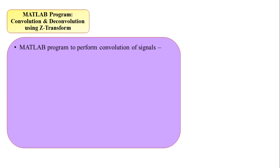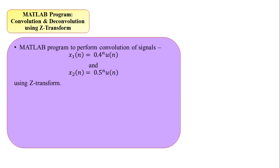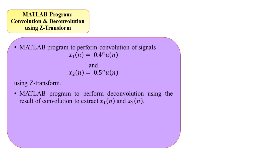We take the program statement as a MATLAB program to perform convolution of signals. The signals are given in discrete time as x1(n) = 0.4^n * u(n) and x2(n) = 0.5^n * u(n), where u(n) is the unit step signal already generated in the MATLAB environment in earlier videos. The task is to accomplish convolution and deconvolution using the Z-transform.